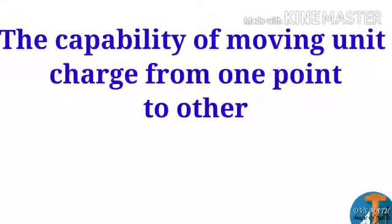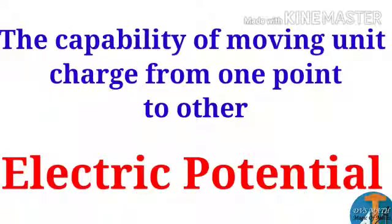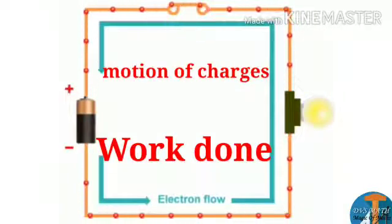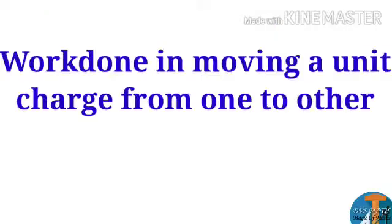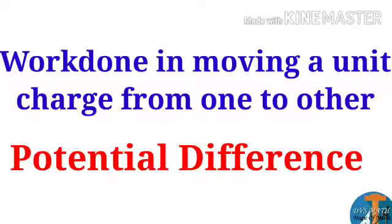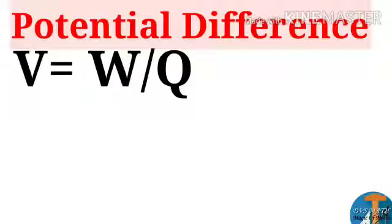The capability of moving unit charge from one point to another point we are calling electric potential. It is the capability of moving electric charge from one point to another, and in moving we will say that work is done. So this work done in moving electric charge from one point to another point we are calling potential difference. Potential difference is represented by the letter V. V = W/Q, where W is work done and Q is charge.